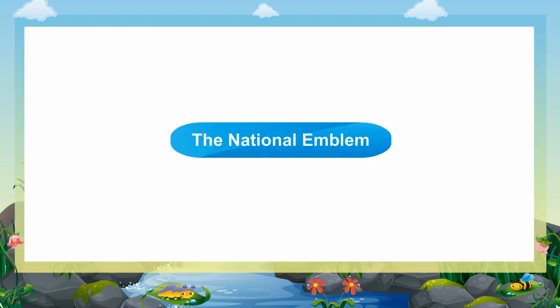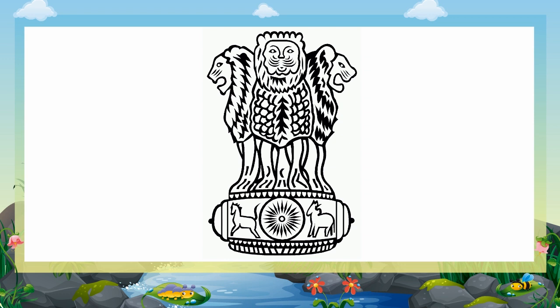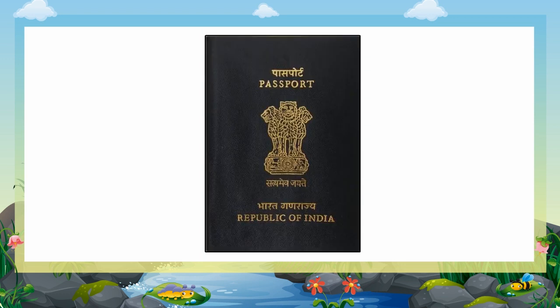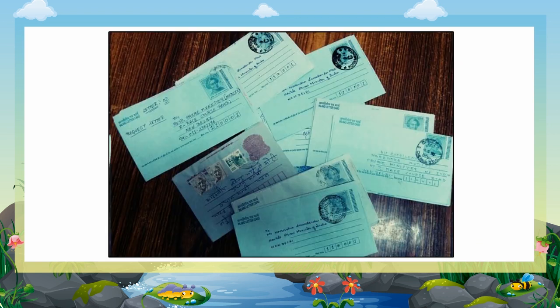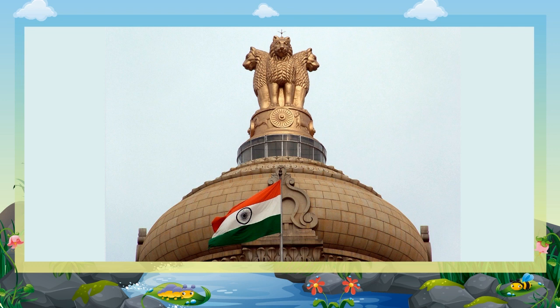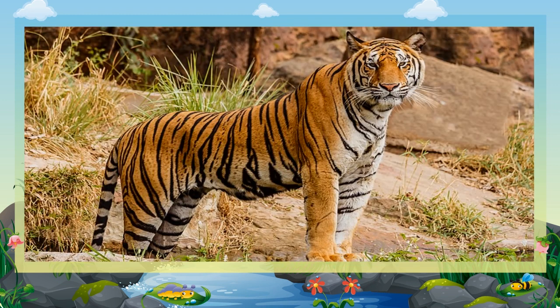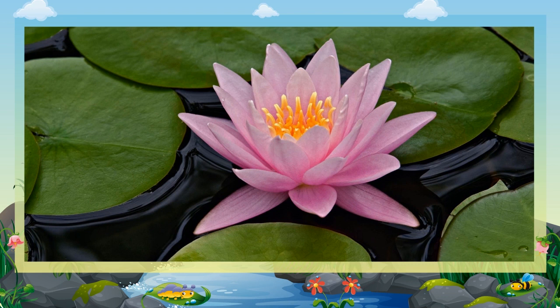The National Emblem may be seen on all government documents, coins, currency notes, letters and envelopes. Our national emblem has been taken from the Sarnath lion capital of Ashoka. There are four lions facing in different directions, but in the emblem we have adopted, only three can be seen. The tiger is the national animal of India. Lotus is our national flower, while peacock is our national bird.